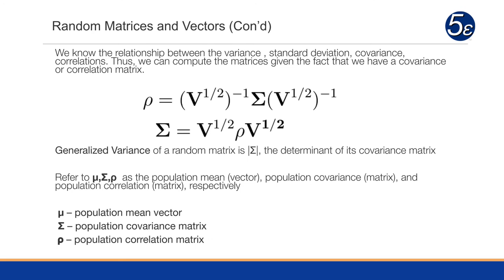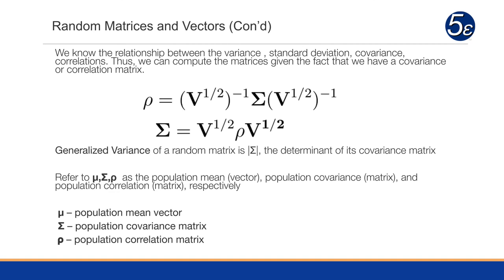We can now understand the relationship between the correlation matrix and the covariance matrix. If we have the correlation matrix, we compute the covariance by multiplying it by the standard deviation matrix in front and at the end. If we have a covariance matrix, we multiply it by the inverse of the standard deviation matrix, both in front and in the back. The generalized variance of a random matrix is the determinant of its covariance matrix. We refer to mu, sigma, and rho as the population mean vector, population covariance matrix, and population correlation matrix, respectively.